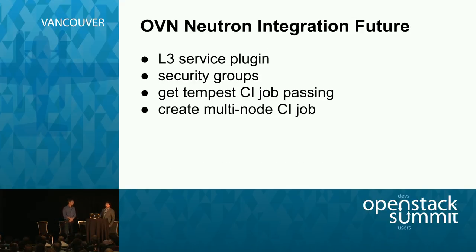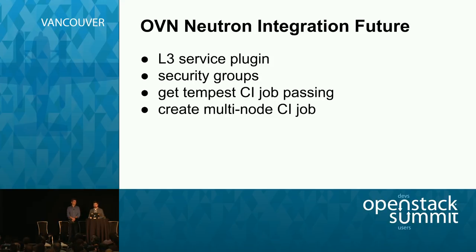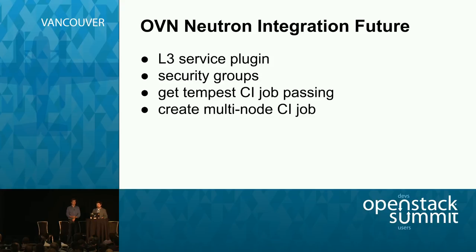On the Neutron integration side, things are in good shape for what's currently implemented. As additional OVN features become available, we'll implement the Neutron side — for example, an L3 service plugin and security group support. We have a Tempest CI job in OpenStack's CI infrastructure running the full test suite, though it was just created and needs cleanup. We also plan to create a multi-node CI job to ensure connectivity between multiple hypervisors doesn't break.